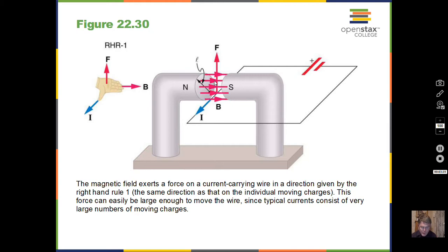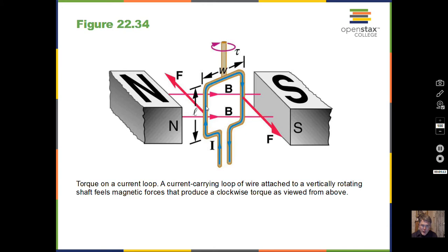We can calculate the value of that force with a formula: the current in the wire times the length of the wire in the magnetic field, times the strength of the magnetic field (assumed uniform over the whole length), multiplied by sine of θ, where θ is the angle between the current and the magnetic field. In this sketch that would be 90 degrees, since the current comes out toward you and the magnetic field is off to your right — a fairly simple calculation.